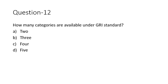Question twelve: how many categories are available under the GRI standard? GRI is a global standard that uses different kinds of categories — some comprehensive, covering the entire universe of application, and some focused on a particular area like healthcare. There are three different categories. Please read about these categories in the NISM textbook.